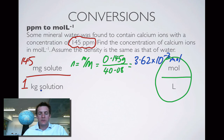How do I know there's 1 kilogram of solution? Well, I don't really. It's just that I decided that if I had 145 parts per million, that means I've got 145 milligrams in every one kilogram. So can I turn that into liters? Well yes, because I know the density is the same as that of water.